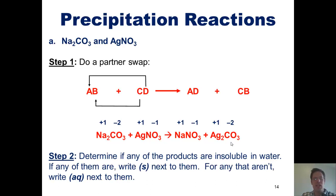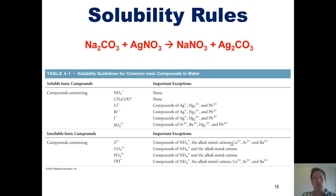Step 2 says we have to now determine if any of the products are insoluble in water. If any of them are, then we write the letter S next to them. For any that aren't, we write the letters AQ next to them. So here's our equation so far. Now, I know you're probably looking at it and thinking, this equation isn't balanced. I know it's not balanced. We'll take care of that in a later step. For now, we're going to do step 2, which is figure out which, if any, of the products are insoluble in water. So we're going to look, first of all, at sodium nitrate.